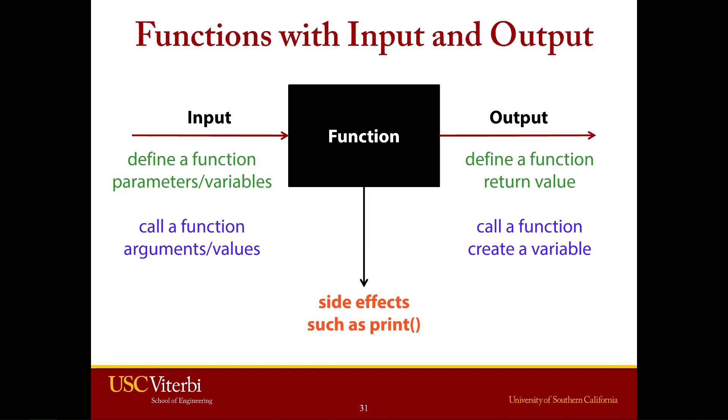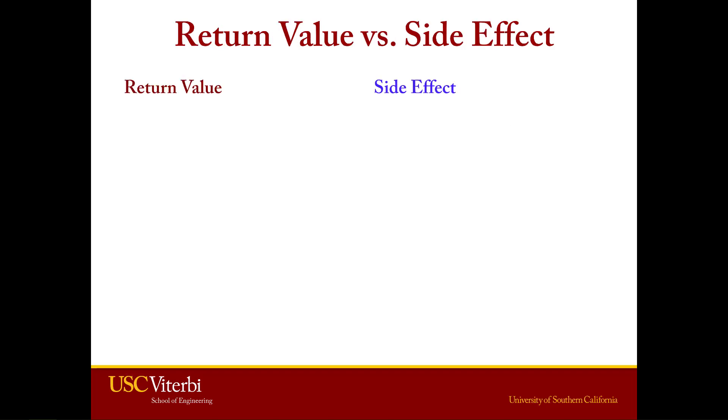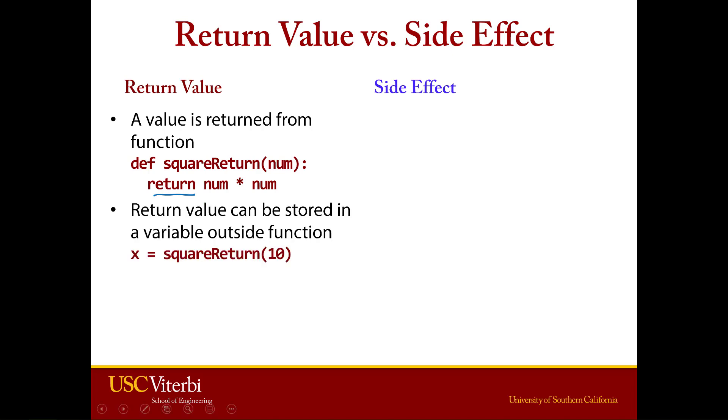And the last point about this is just to make a little bit of a distinction between something called a side effect and a return value. So return value is what we just talked about. Return value is you can return something from a function. So this is the only way to get a value out of a function. And we learned that you simply say return. Once you do that, you can then store it, print it out, do whatever you need to do with that variable because it's returned outside.